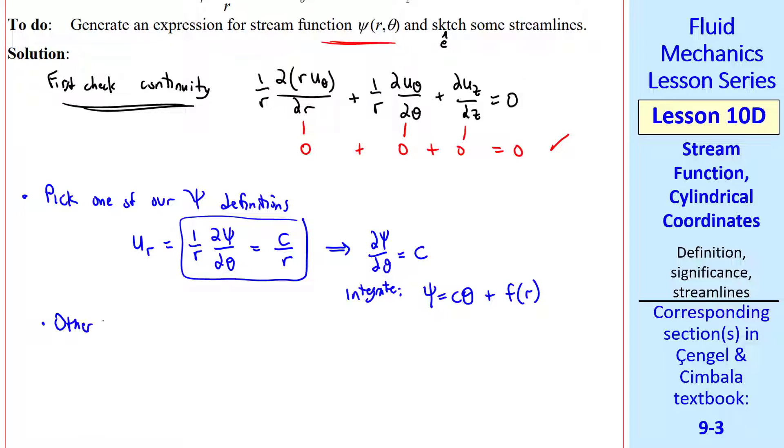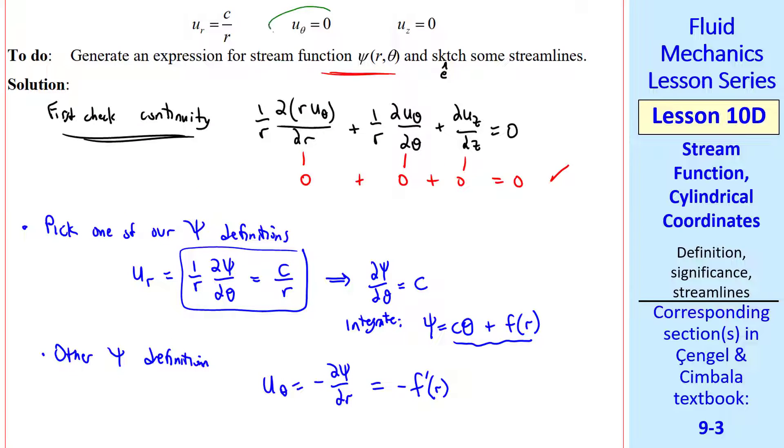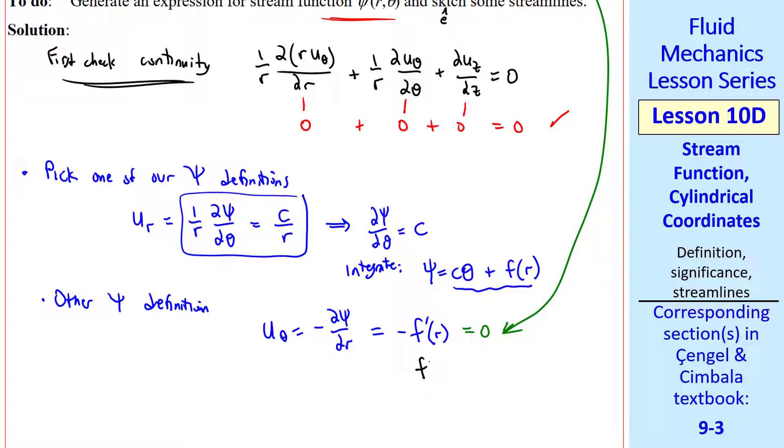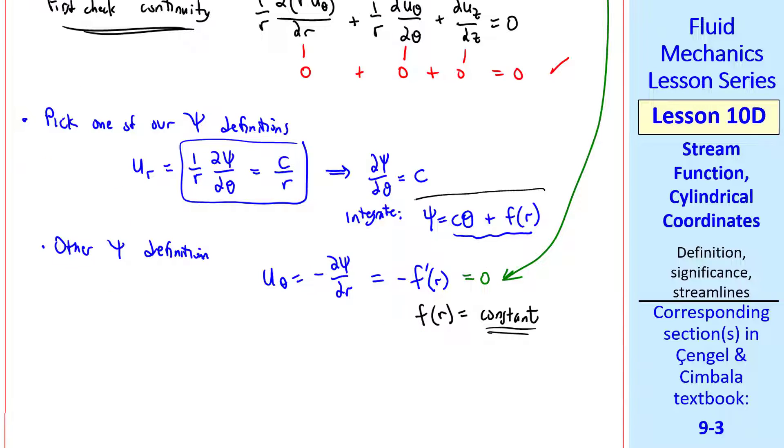now use the other psi definition. U_theta is minus del psi del r, which from here gives us minus f prime of r. But we know from the given information that u_theta is zero. So f prime of r is zero, which we can integrate. So f of r is some constant. Note that we don't set this to be function of theta, or we'd be chasing our tails. So finally, this equation for psi, which is a function of r and theta in general, is C theta plus a constant. This psi is only a function of theta.